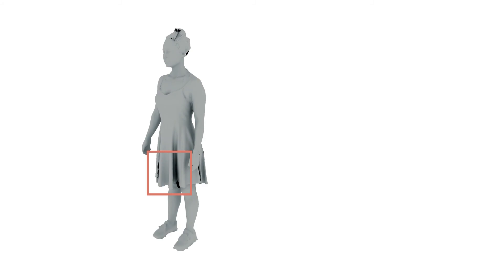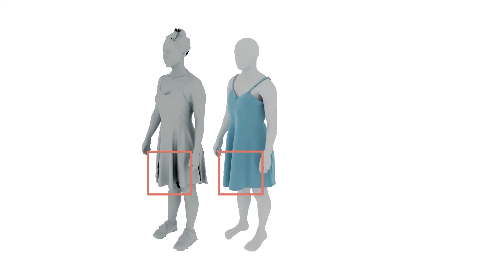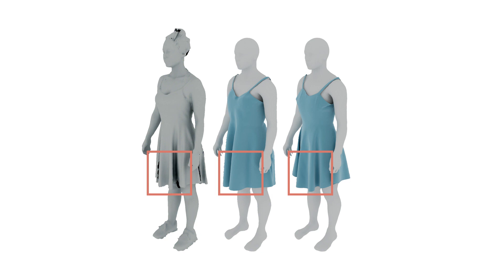Thanks to our differentiable simulator approach, we are able to further optimize for the appropriate body shape. Here we show the difference between our initial and improved body shape. We demonstrate the importance of optimizing for the cloth material: starting from the scan, we produce an initial drape, but the material is incorrect. After optimization, we closely match the wrinkling behavior of the cloth.